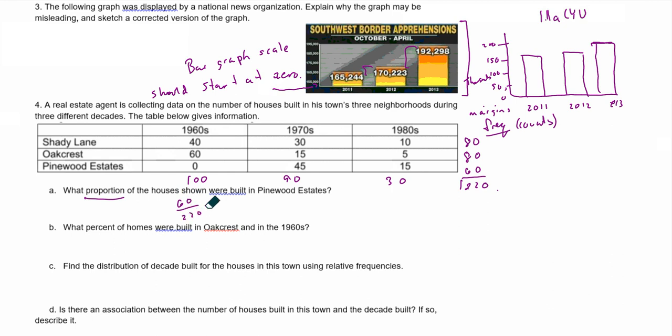I added in the margins — sometimes you'll have to do that as well. If we go 60 divided by 220, we get about 27%. Note that proportions are expressed as a percent. That's the marginal proportion for Pinewood Estates. Now, what percent of homes were built in Oak Crest in 1960? When we talk about percent, we're talking about relative frequency.